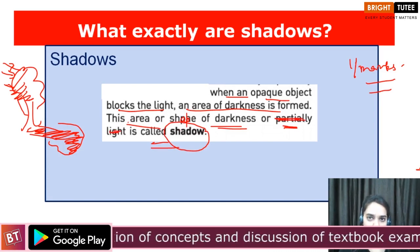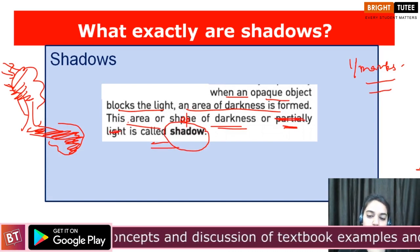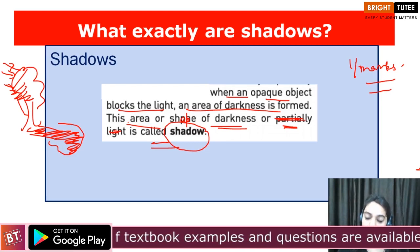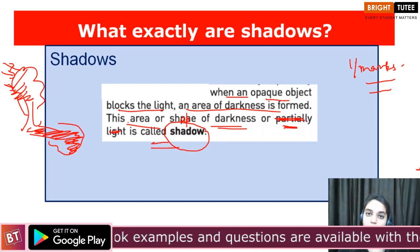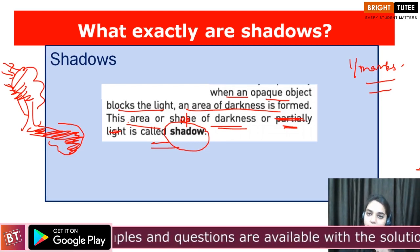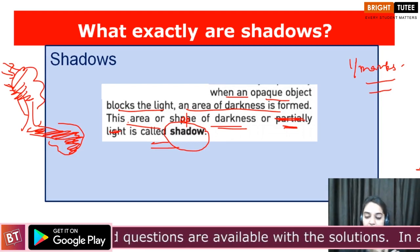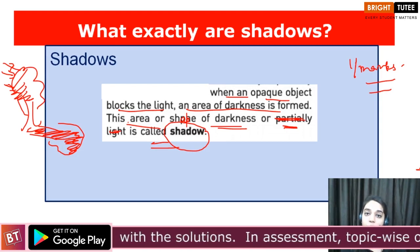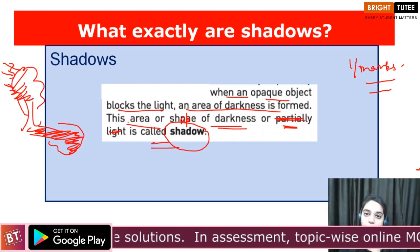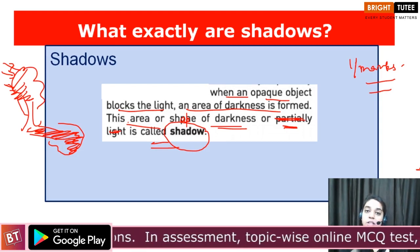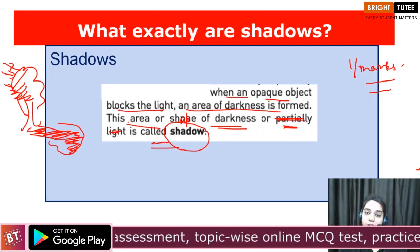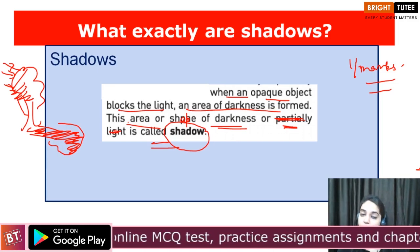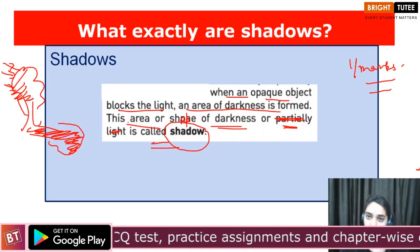I hope you would have understood what a shadow is. Simply, when an opaque object blocks the path of light, there is a region where the light does not reach, and it creates a dark patch — the area of darkness — which is known as the shadow.